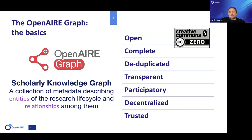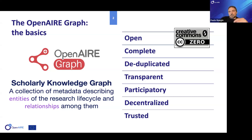We want the graph to be deduplicated, because we aggregate metadata from so many sources that we likely collect the same objects from different places. We want everything to be transparent — publishing our workflows, decision-making, and algorithms — while keeping track of provenance for every piece of information. We want it to be participatory, collecting feedback and engaging with the community to improve the graph's quality and operation.